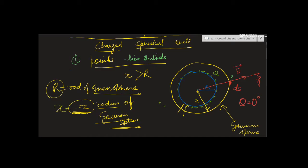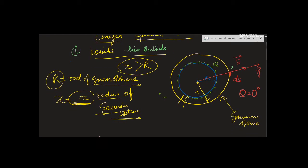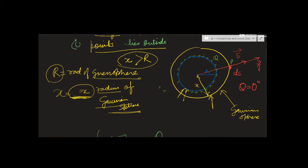The first condition is x greater than R, meaning the point lies outside. The yellow Gaussian sphere lies outside the blue given sphere. You can also see the small surface area element ds on the Gaussian sphere.